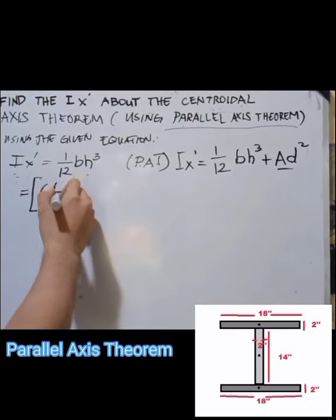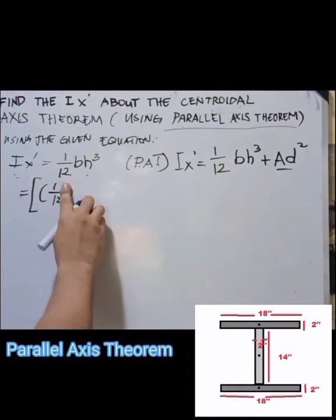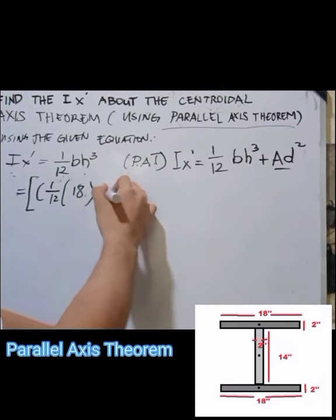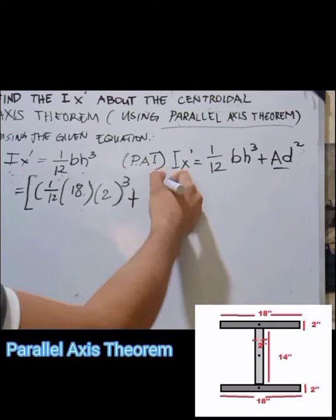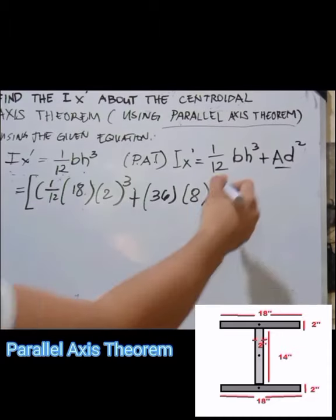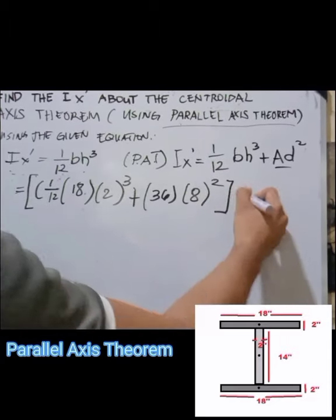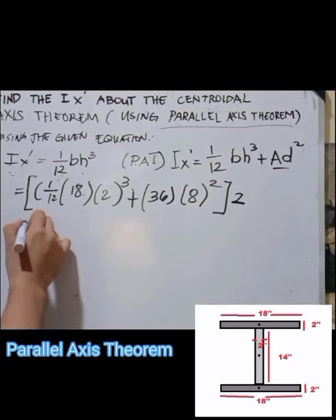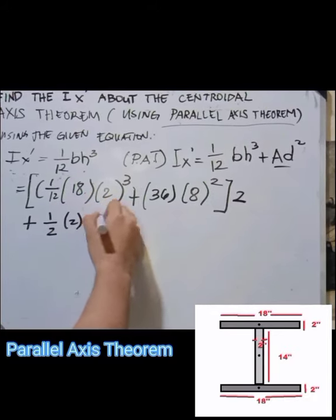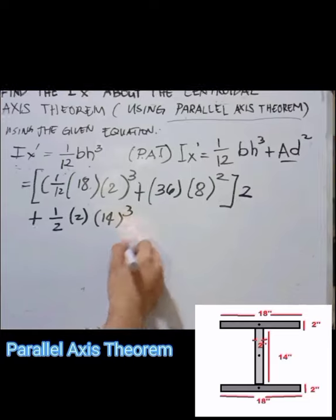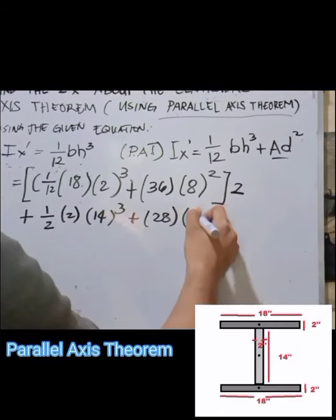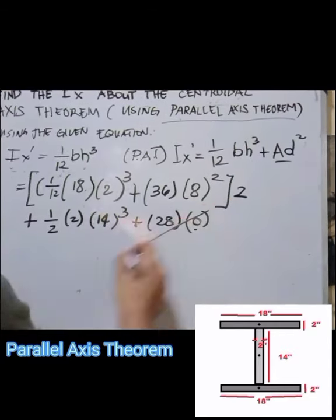We apply the formula: (1/12) × 18 × 2³ + 36 × 8², multiplied by 2 because there are two symmetric rectangles, where 8 is the distance between centroids. Then we add (1/12) × 2 × 14³ + 28 × 0 for the web rectangle, where the centroid distance is zero.